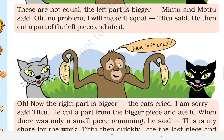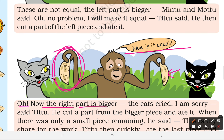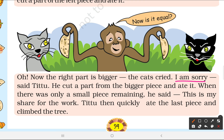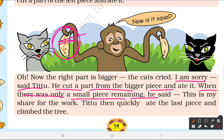T2 said, 'I will make it equal.' He cut a part from the left piece and ate it. Now the right part became bigger. T2 then cut a piece from the right side and ate it too. He kept alternating, cutting from the bigger piece each time and eating it, until only a very small piece remained. T2 then said, 'This small piece is my share for the work,' and ate it too.